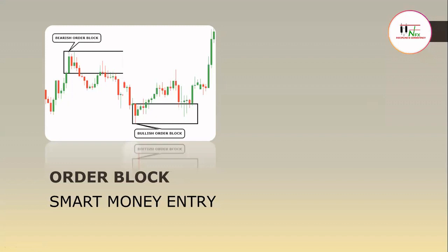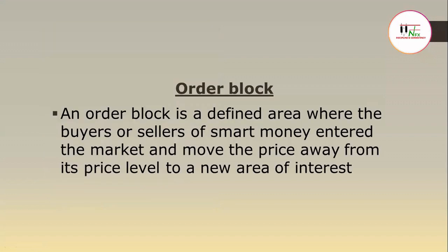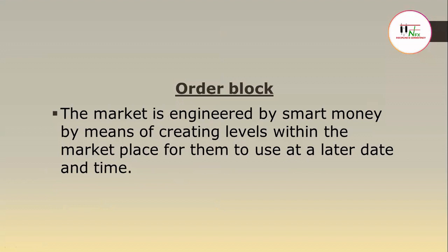The order block will help you to know the smart money entry. An order block is a defined area where the buyers or sellers of smart money enter the market and move the price away from its price level to a new area of interest. The market is engineered by smart money by means of creating levels within the marketplace for them to use at a later date and time. That is why even using natural support and resistance, you can see support or resistance of three years back can be used in current markets.